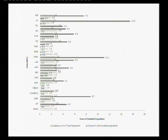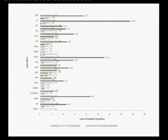Around 2.2% of the total population of India is disabled. Across states, a few have more than 2.2% — those include Odisha, Telangana at 3%, and Sikkim at 3.3%. But if you look at where the total disabled population is concentrated, it is highest in Uttar Pradesh at 15.5%, followed by Maharashtra at 11%, and Chandigarh at 8.7%.